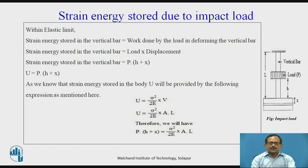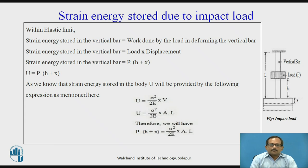As we know, strain energy stored in the body U is given by the expression: U = σ² / (2E) × V, where volume V = A × l. Therefore, strain energy stored equals P(h + x). Substituting this value into the above equation, we get: P(h + x) = σ² / (2E) × A × l.